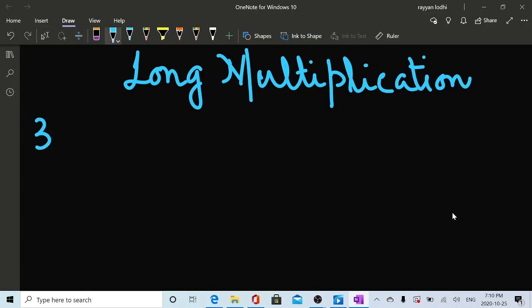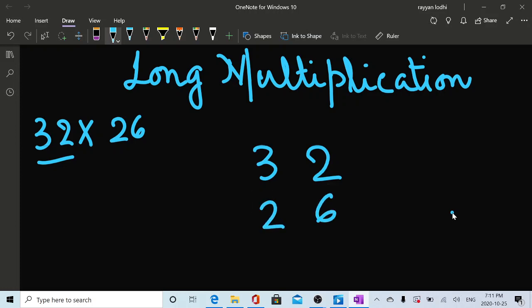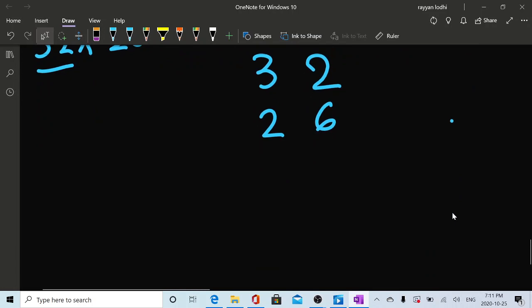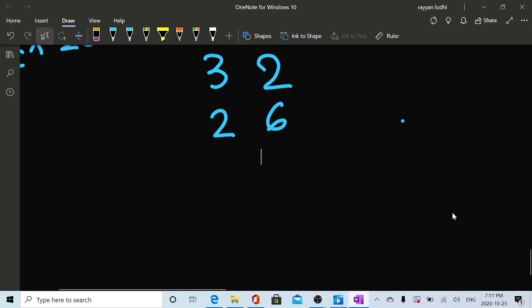So let's pick up an example of 32 times 26. This 32 here at the top is your first number and the 26 goes underneath. Tens under tens and ones under ones. Now here, we will pick this six and multiply it with this two.